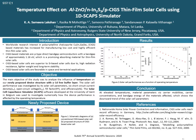Worldwide research interest in copper indium gallium selenide (CIGS) based materials has increased for manufacturing low cost and highly efficient thin film solar cells. CIGS based solar cells are superior to silicon based solar cells due to high radiation resistance, lighter weight, and long term stability. These attributes are favorable in space and terrestrial applications. CIGS based materials are P-type direct bandgap semiconductors with a band gap of approximately 1.16 electron volts.